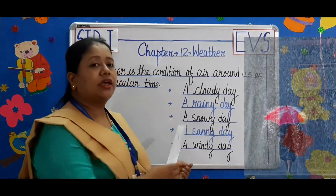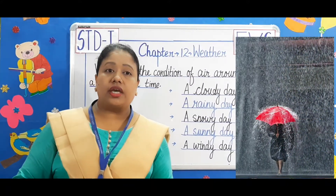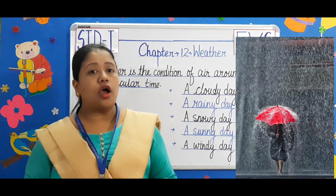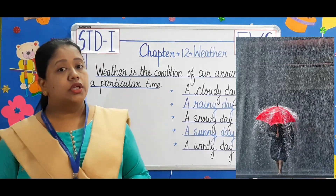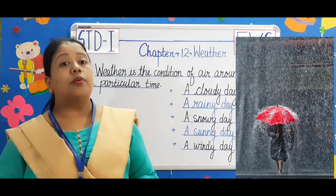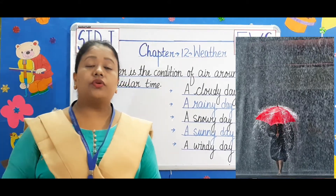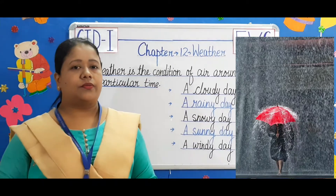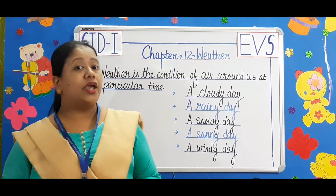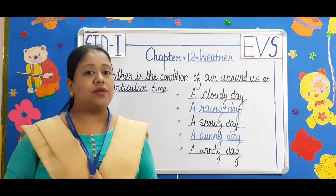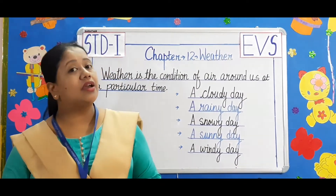On a rainy day, it rains a lot. On a rainy day, we use raincoats, umbrellas, and gumboots to keep us dry. Children love to play in the rain. Sometimes we see a rainbow in the sky.